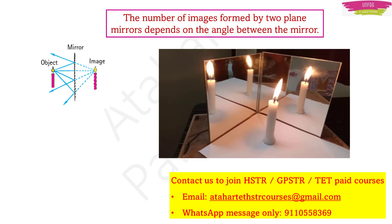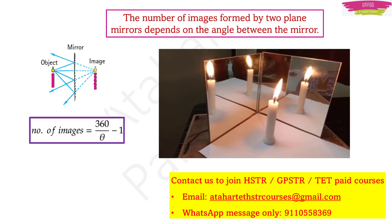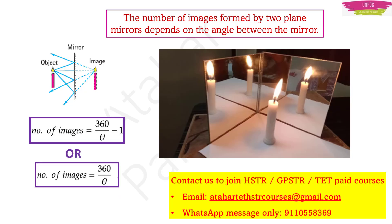There are two formulae to find the number of images formed by two plane mirrors. One formula is: number of images = 360/θ − 1. Another formula is: number of images = 360/θ. The doubt aspirants have is: which formula should be used when? I am here to clear this doubt because it is a very important concept.